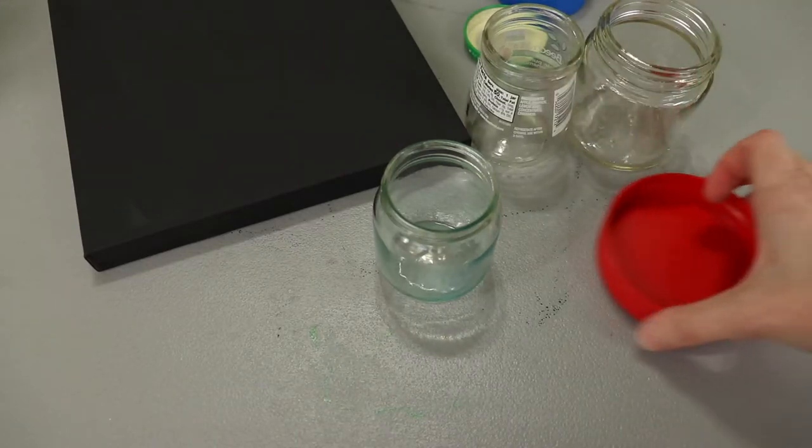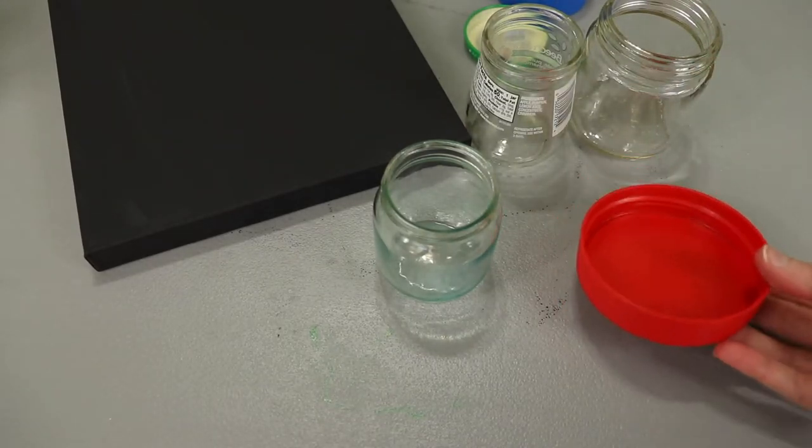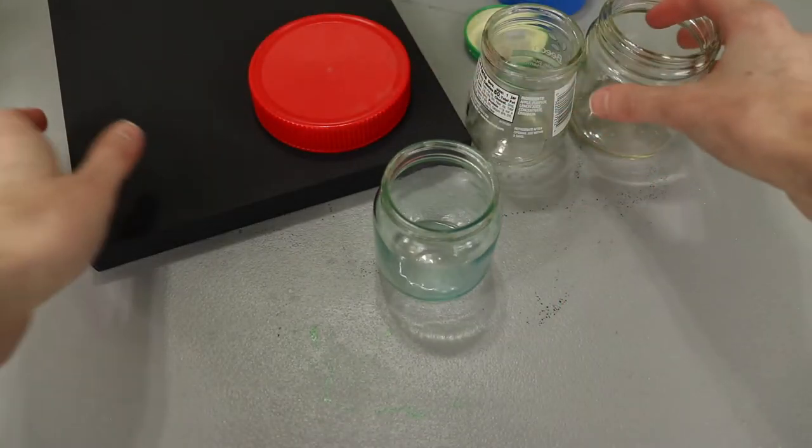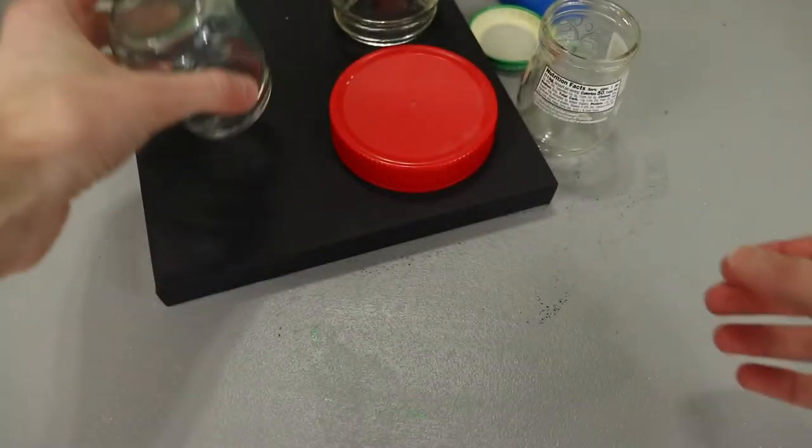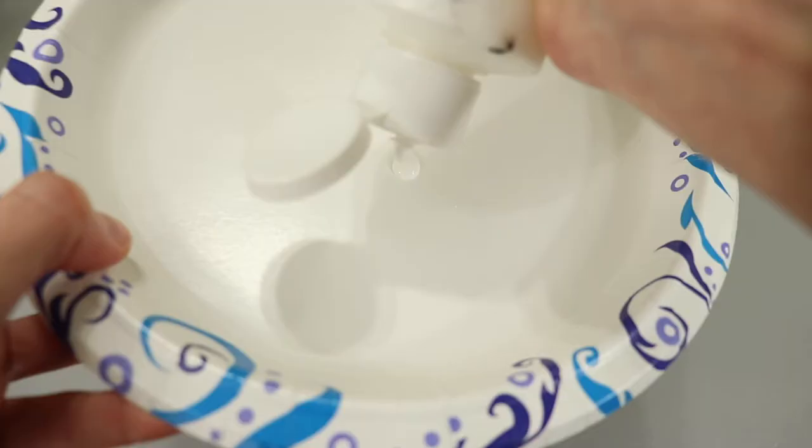Once my canvas was dry I was ready to paint the bubbles. To create the bubble shape I'm using a variety of round containers and lids of different sizes. I'm making the outline of my bubbles white for the greatest contrast but you can use whatever color you want.